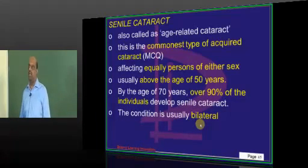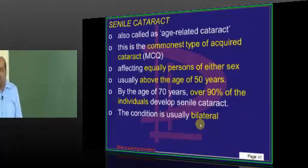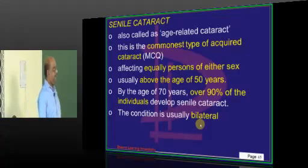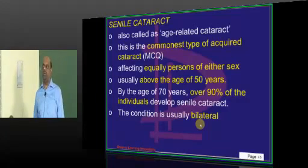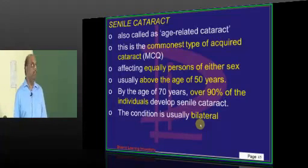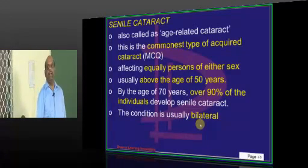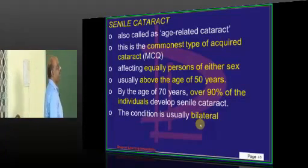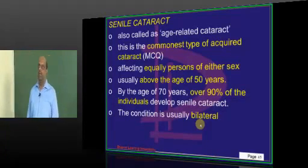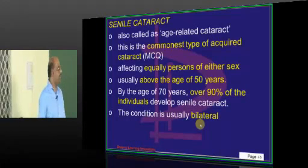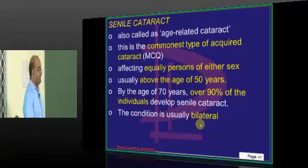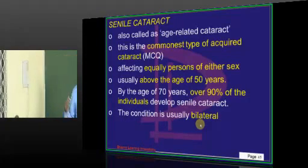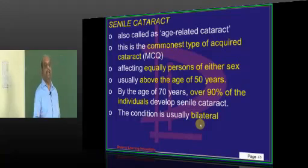Now, senile cataract — age-related cataract — which we all see in ophthalmology postings regularly. The commonest type of acquired cataract is age-related or senile cataract. It is equally common in men and women, usually above the age of 50. By the time people reach 70 years, 90% will have senile cataract, and usually this condition is bilateral.